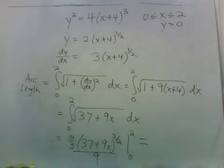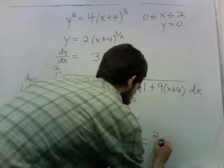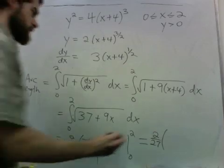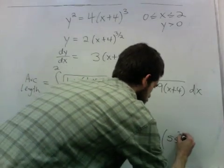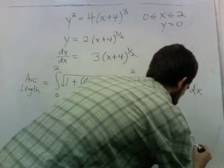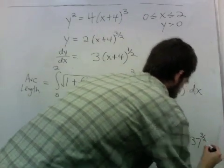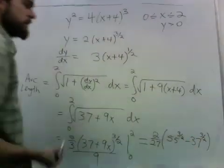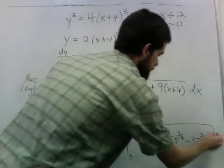And this is 2 over 27. I'll have 55 to the 3 halves, minus 37 to the 3 halves. You could put this in your calculator if you want, but that's good enough.